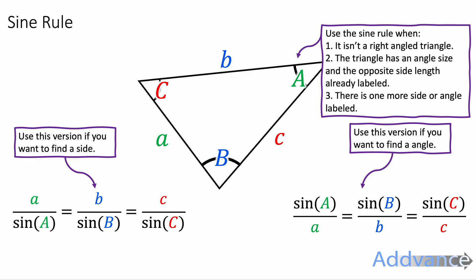We're going to use the sine rule for questions where it's not a right-angled triangle, for when we're given an angle size and the opposite side length — we're already given those measurements in the question — and there is an extra angle or an extra side labelled, so one more side or angle labelled.